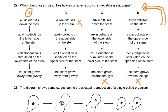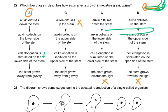Auxin collects on the lower side of the stem, and cell elongation is stimulated on the lower side. So the stem is not going to go down — cell elongation is greater on the lower side, so the stem is going to grow upwards, away from gravity.